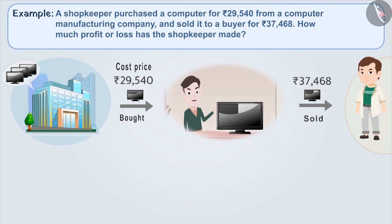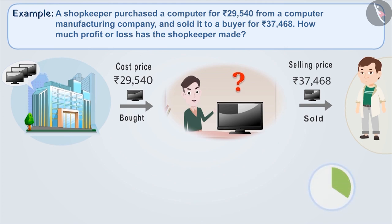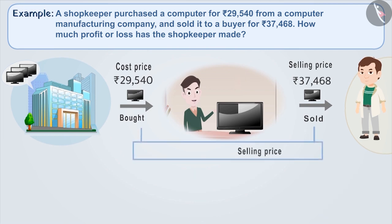If he sells the computer to a customer for Rs. 37,468, then the selling price for the shopkeeper is Rs. 37,468. By looking at the cost price and selling price, can you tell whether the shopkeeper has made a profit or a loss? Think for a while.